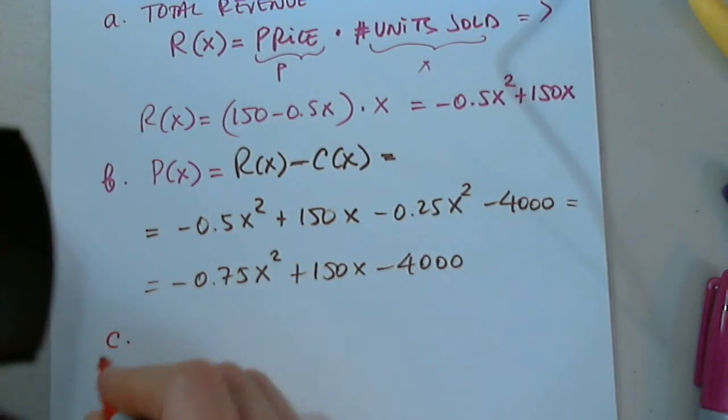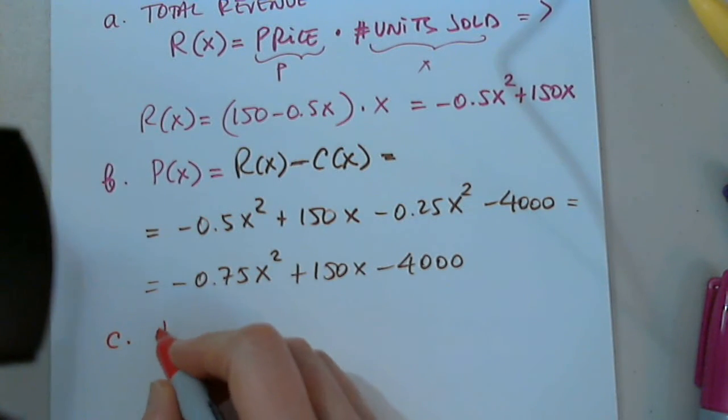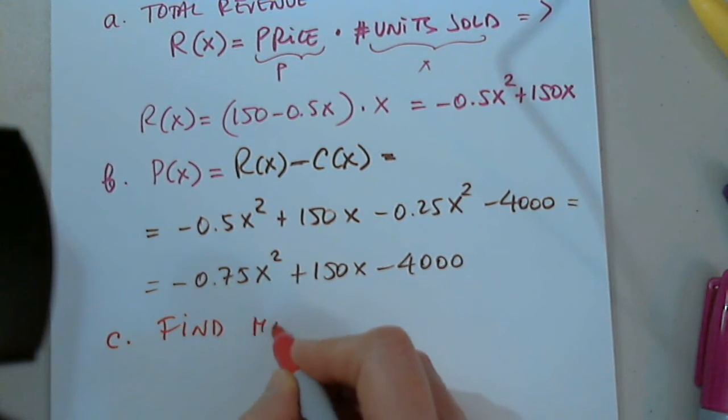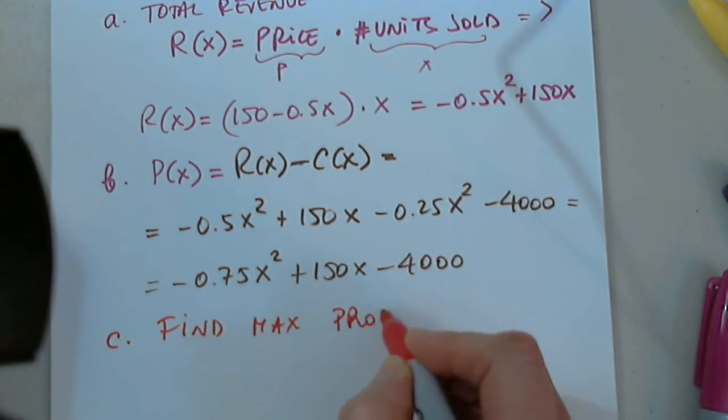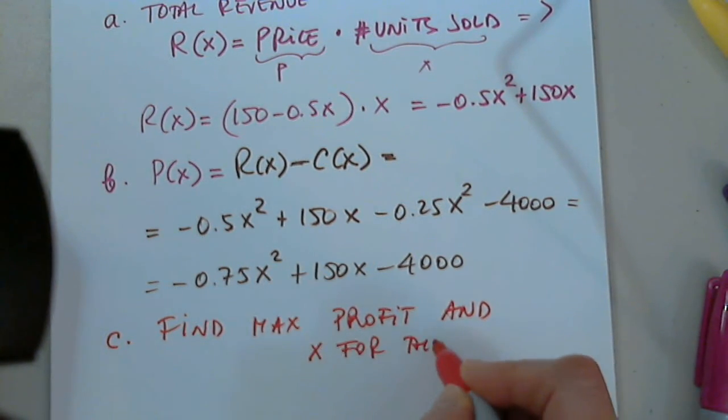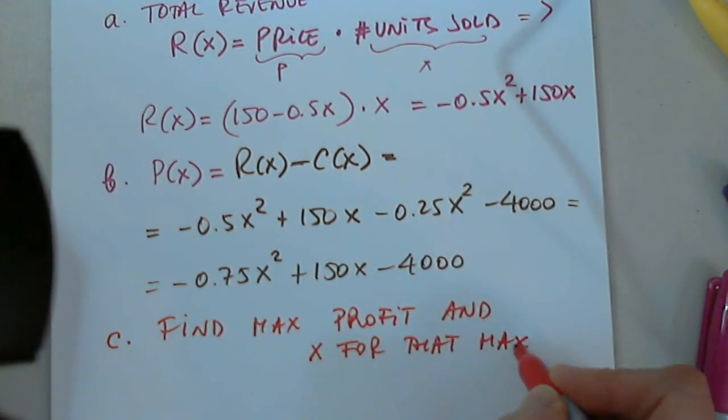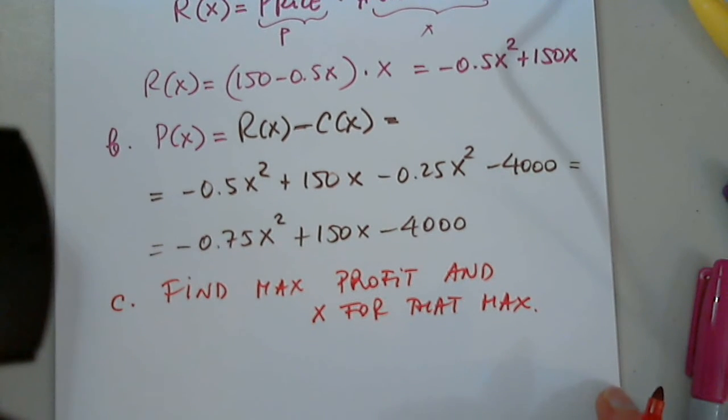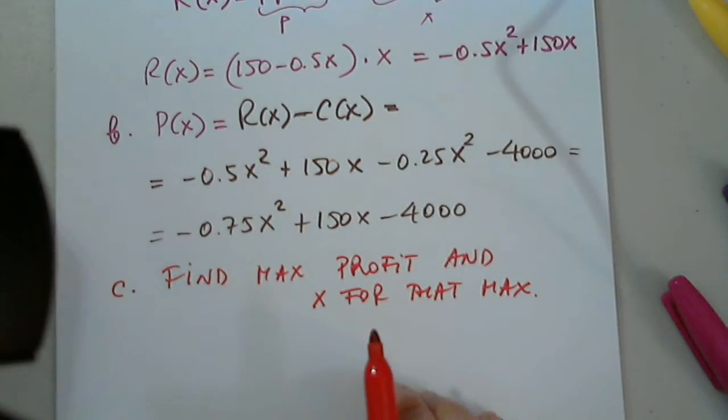In part C, how many suits must the company produce and sell in order to maximize profit? So, in other words, find max profit and X for that max. What do I need to determine in order to find the maximum of a function? Max or min, but in this case, max. Thank you very much. Very good.